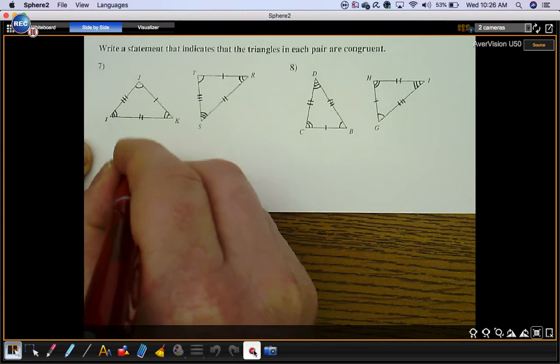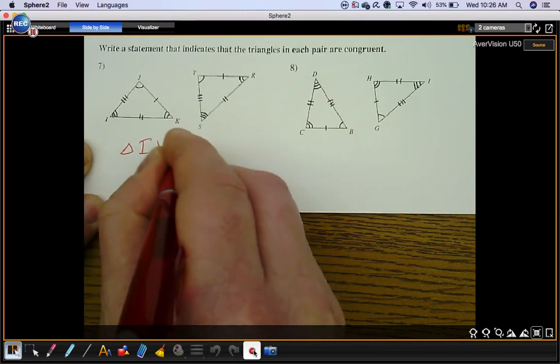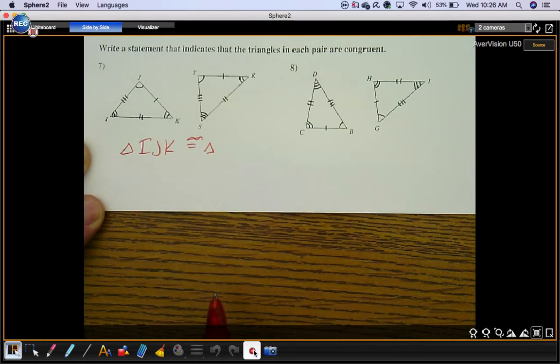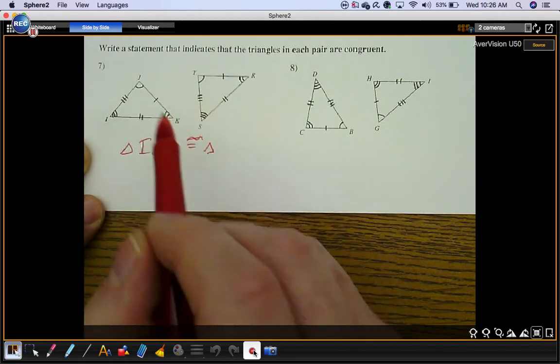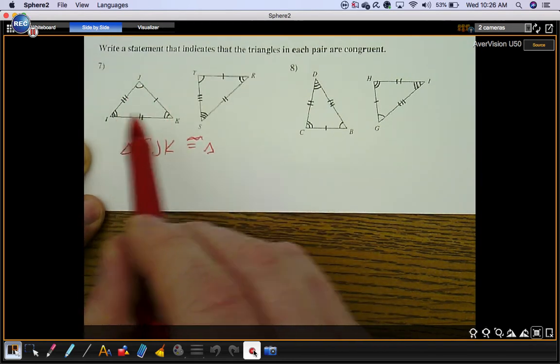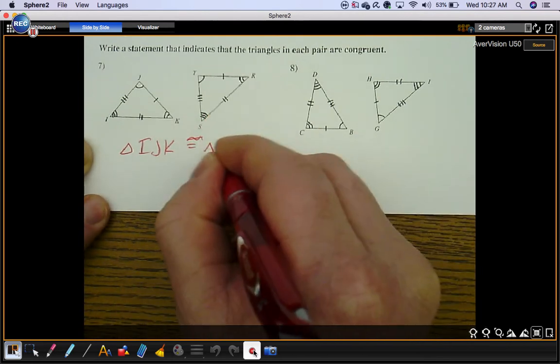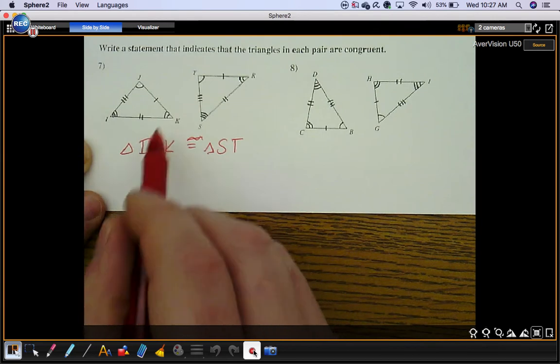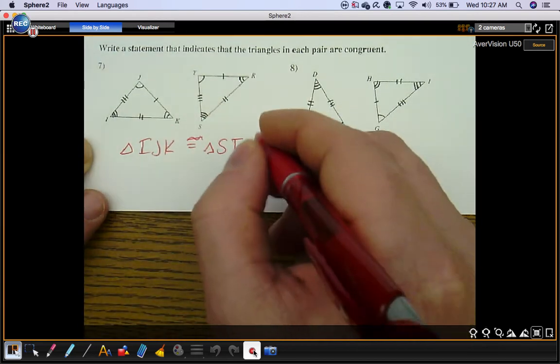Triangle I, J, K is going to be congruent to this triangle. Line up the parts. I has three arcs, so I goes with S. J has one arc, so that goes with T. And K has two arcs, that goes with R.